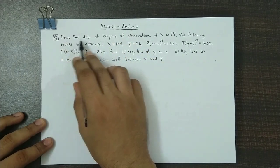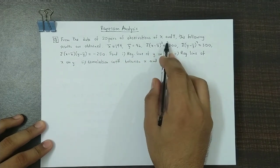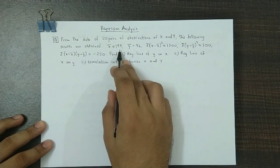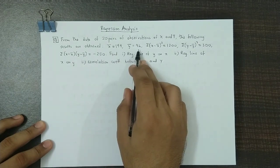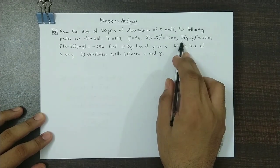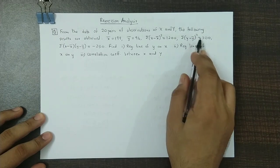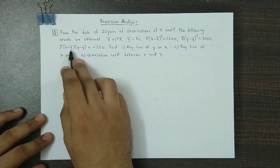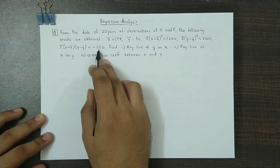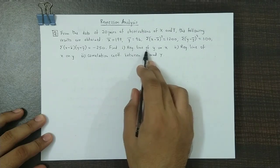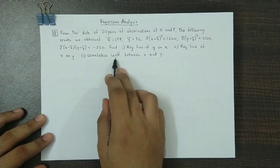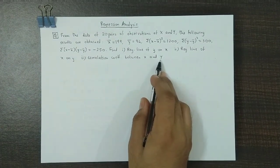The question is: from the data of 20 pairs of observations of x and y, the following results are obtained. X bar is 199, y bar is 94. Summation of (x minus x bar) squared is 1200. Summation of (y minus y bar) squared equals 300. Summation of (x minus x bar)(y minus y bar) equals minus 250. We have to obtain the regression line of y on x, the regression line of x on y, and the correlation coefficient between x and y.